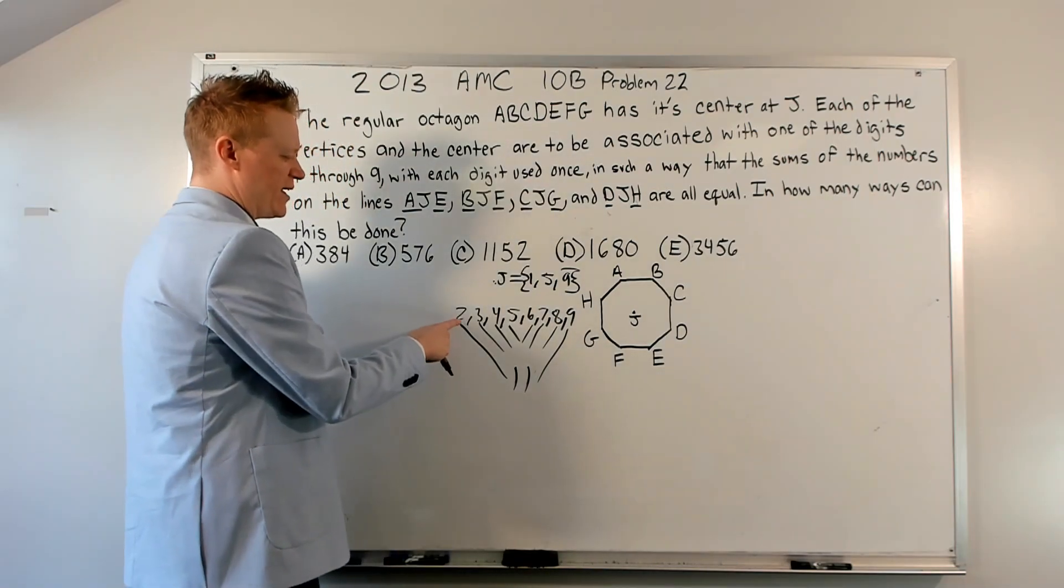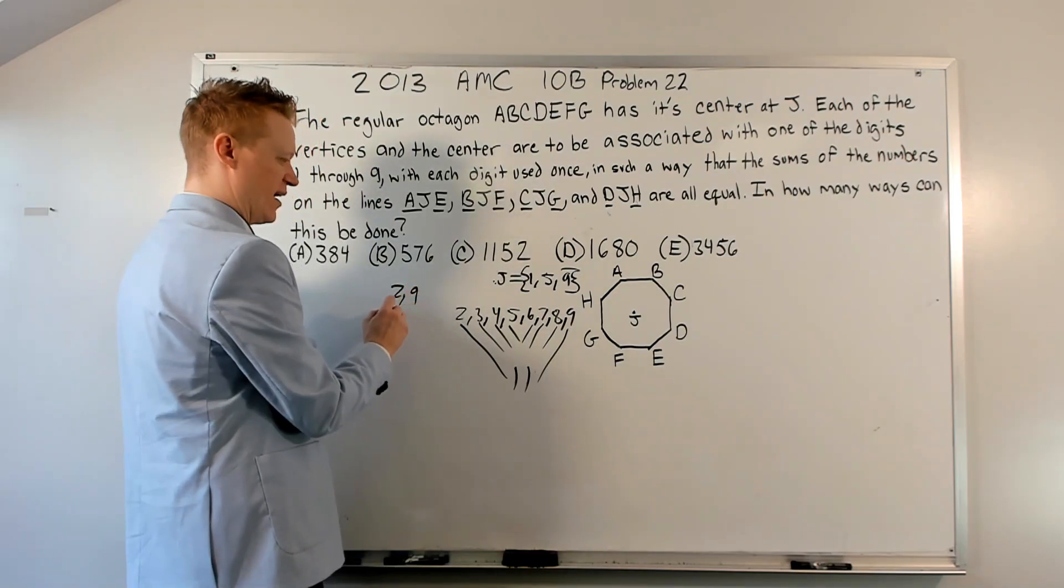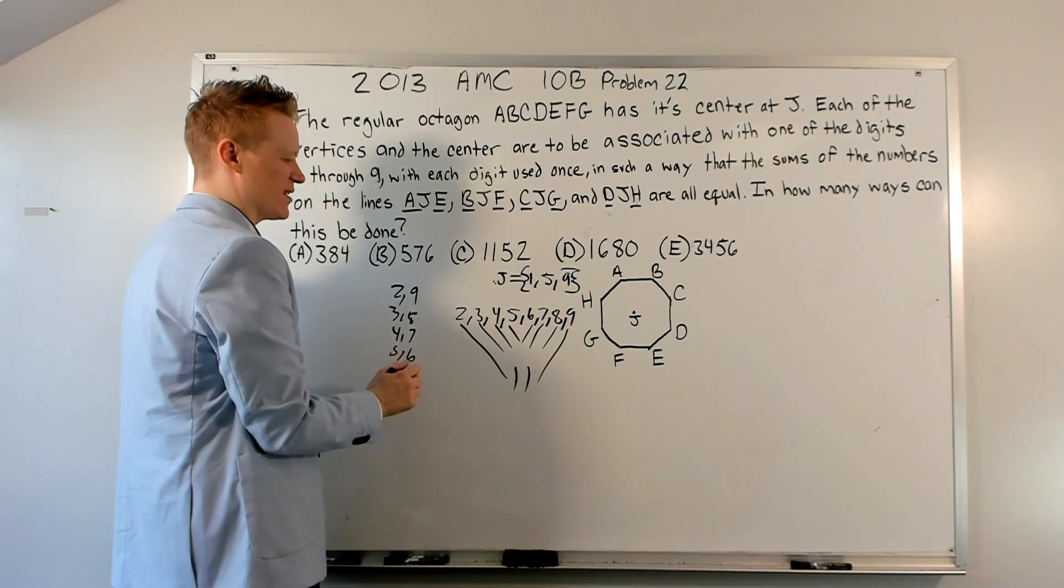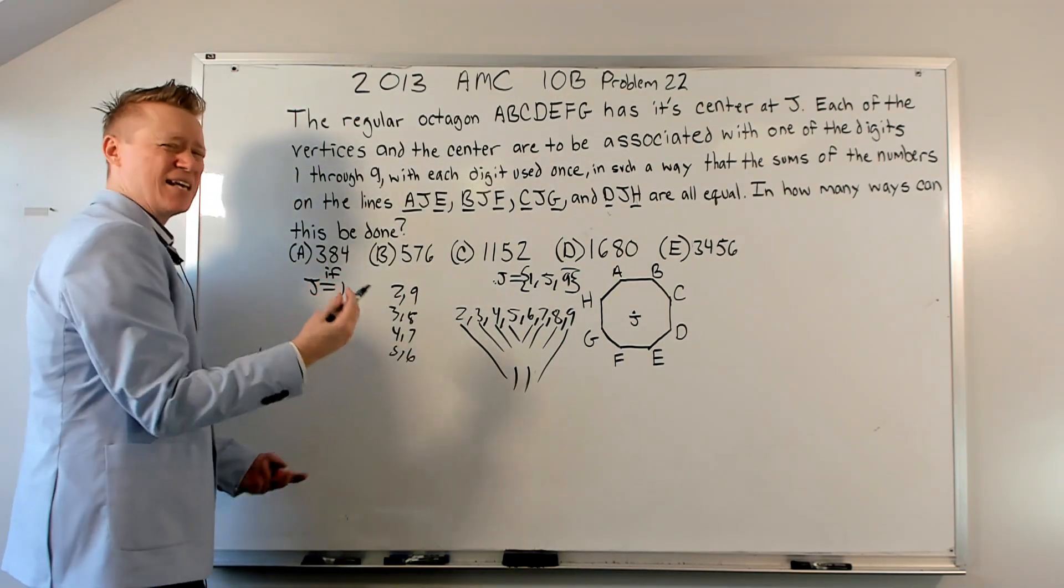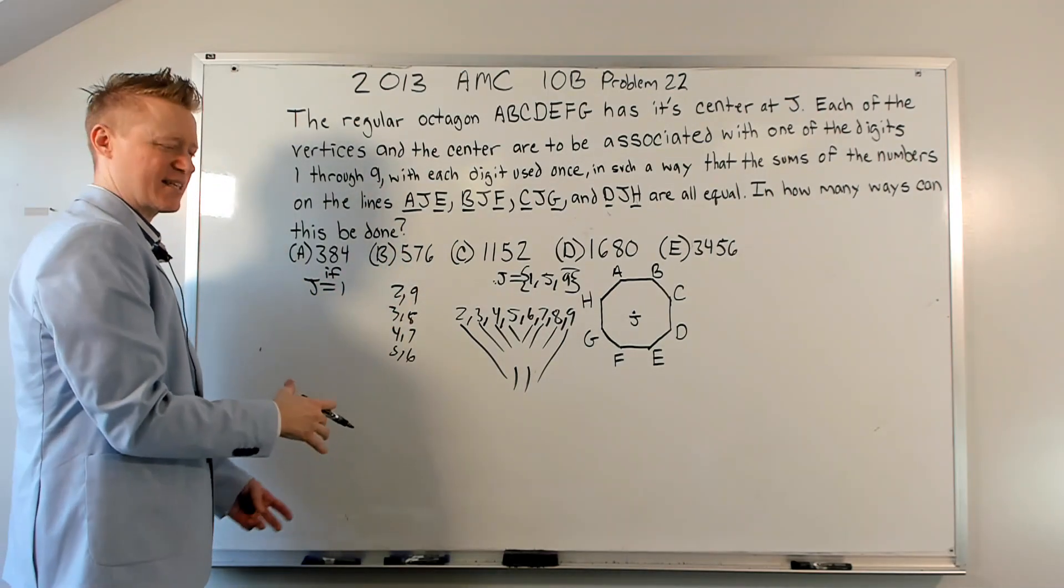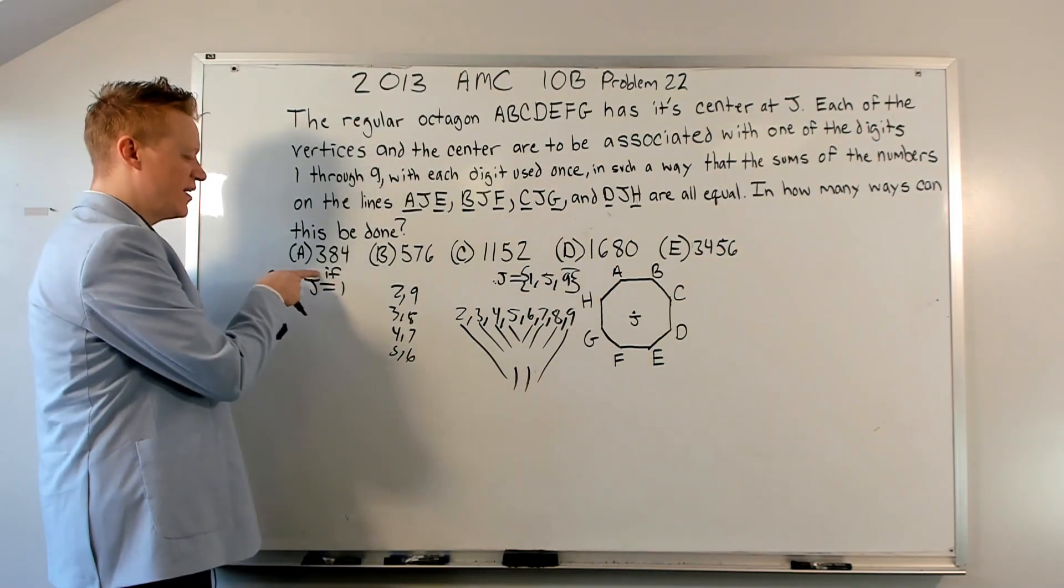Wasn't this just like the Gaussian way of adding? You just take first and last, second and second to last, third and third to last, and the two middle. Those are always going to add up to 11. That's kind of how it has to work. So basically, it would be, how can I assign, let's just take these pairings, right? 2 with 9, 3 with 8, 4 with 7, and 5 with 6 for the scenario where J equals 1.